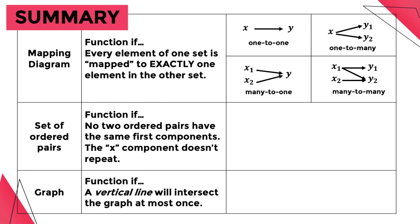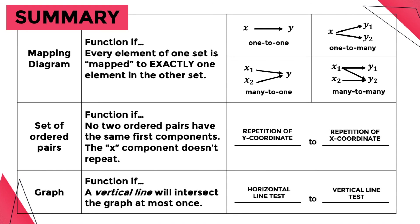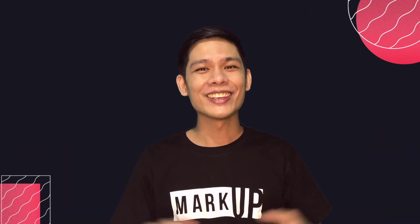Let me give you a summary of what we discussed in this video. Here are the different mapping diagrams and their corresponding type of relation. To identify the type of relation for a set of ordered pairs, we use repetition of Y coordinates versus repetition of X coordinates. To identify the type of relation shown by a graph, we use the horizontal line test versus the vertical line test. Thank you for watching this video. See you again in my next video.